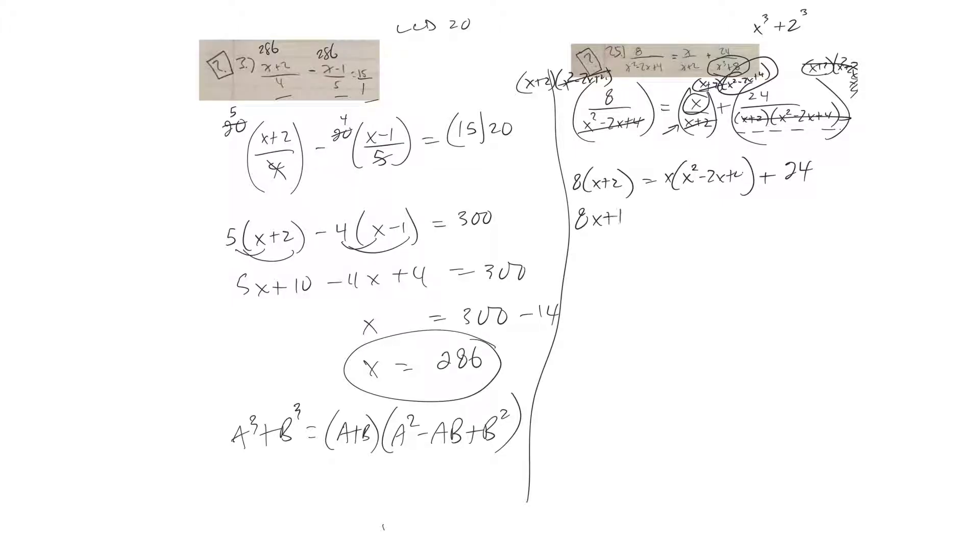Okay, distributive property. Same thing over here. 24 plus 4x plus 24.